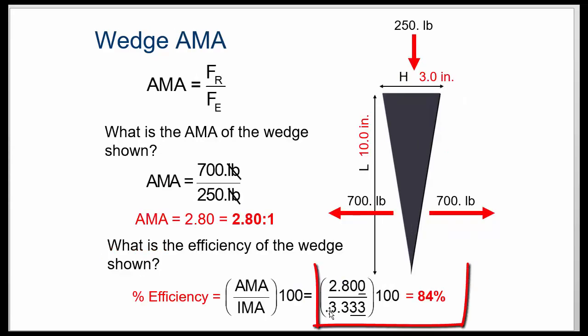because we calculated IMA to be 3.3 to 1 here. We drop that into here. We put the 2.8 that we got from here on top. We end up with 84%. If your number is larger than 100%, you probably have these two numbers backwards.